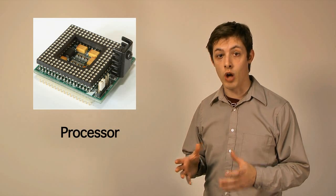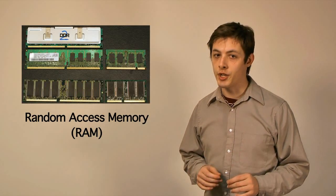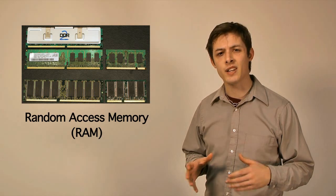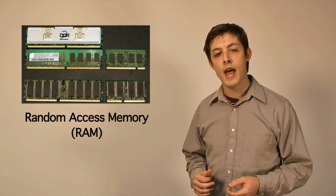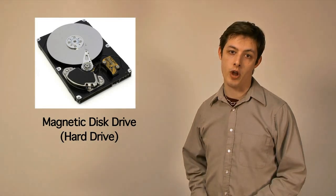Currently, computers are composed of three major sections: processors that control operations and manipulate data; random access memory chips, or RAM, which act as temporary data storage; and the magnetic disk drives that retain information even after power is turned off.